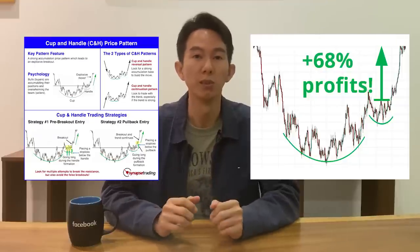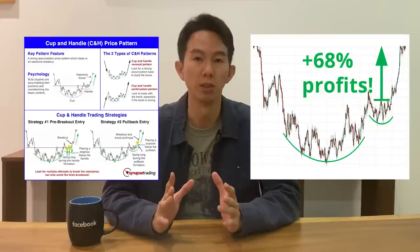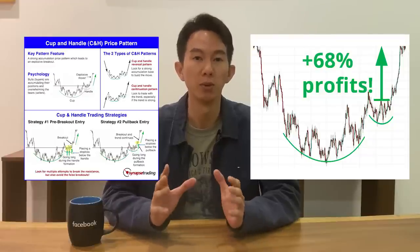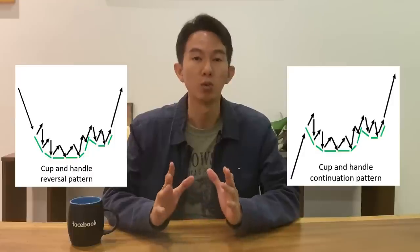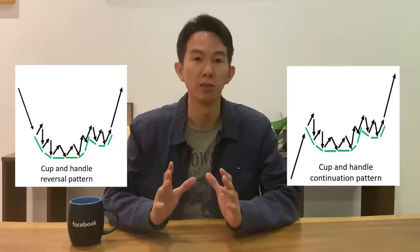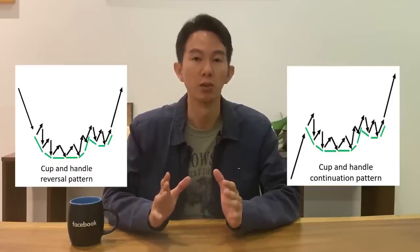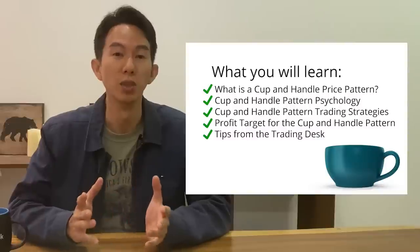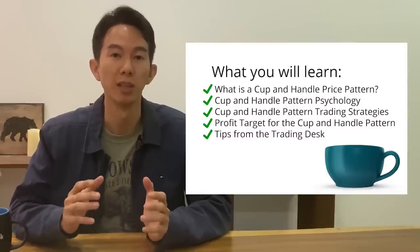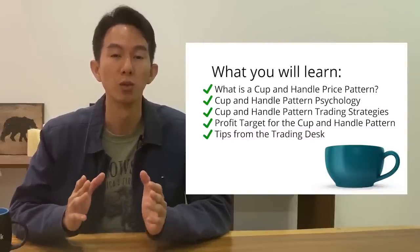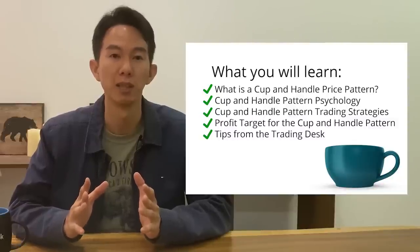The cup and handle is an accumulation buying pattern found during long periods of consolidation, and can lead to powerful explosive moves once the pattern is fully completed. In this video, I'm going to talk about how to take advantage of the cup and handle pattern to trade breakouts, how to avoid forced breakouts, and the best trading strategies for this price pattern.